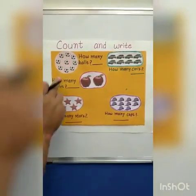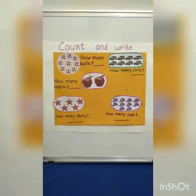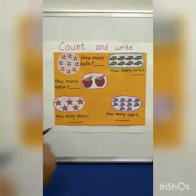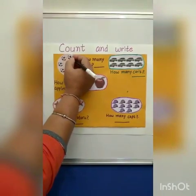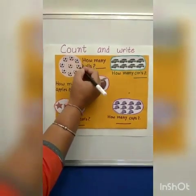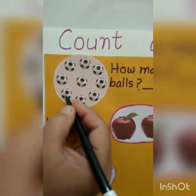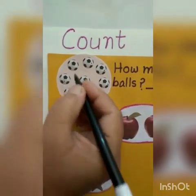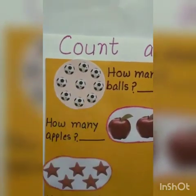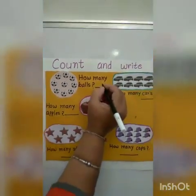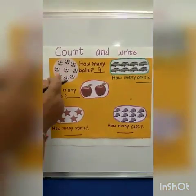We will count these pictures and write the correct answer. How many balls? Let's start the count. 1, 2, 3, 4, 5, 6, 7, 8 and 9. So we will write here 9 — 9 balls.